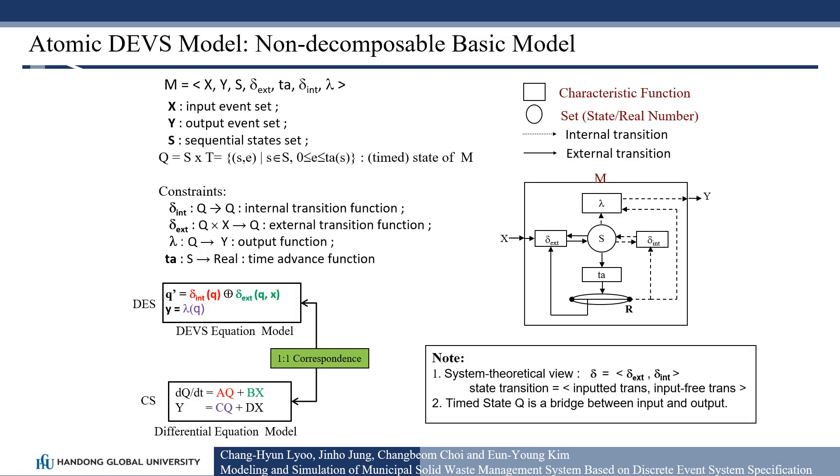DEVS formalism comprises of two types of model to represent discrete event system, atomic models and coupled models. An atomic model M is a model that is affected by external input event X and generates output event Y based on the model state.